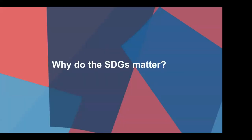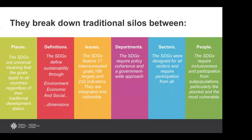Why do the SDGs matter? Quite simply, they break down many traditional silos in our day-to-day work. They break down silos between places — they're a universal, whole-of-society agenda that applies to all communities and all countries, regardless of their traditional development status. They break down silos between definitions, building a robust understanding of sustainability through environmental, economic, and social lenses. They break down silos between issues — while there are 17 colored boxes, the indicator framework paints a picture of goals that are integrated and indivisible.